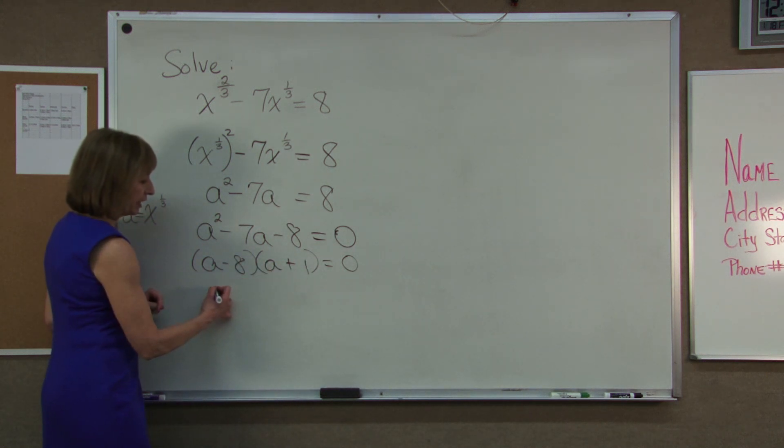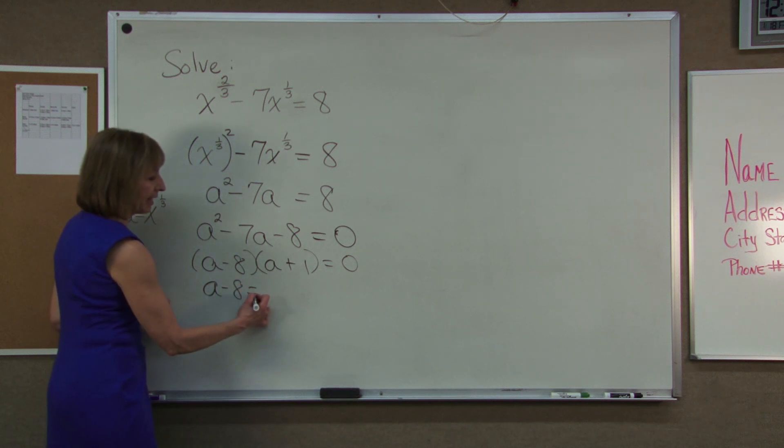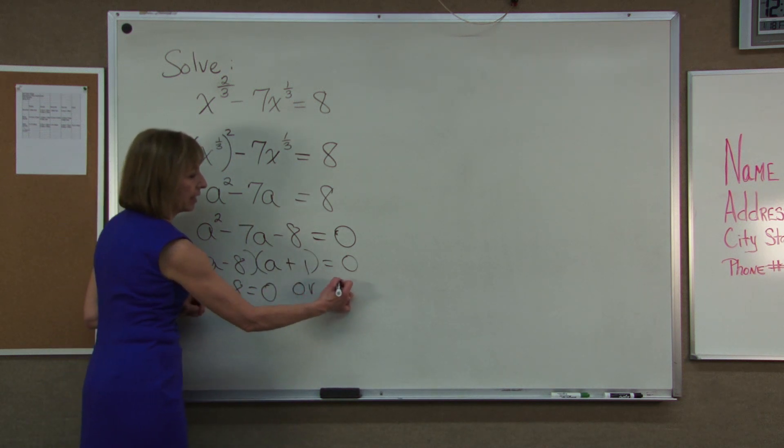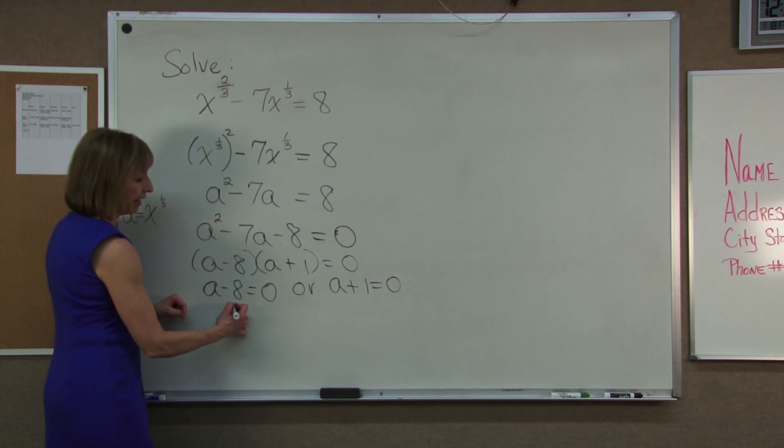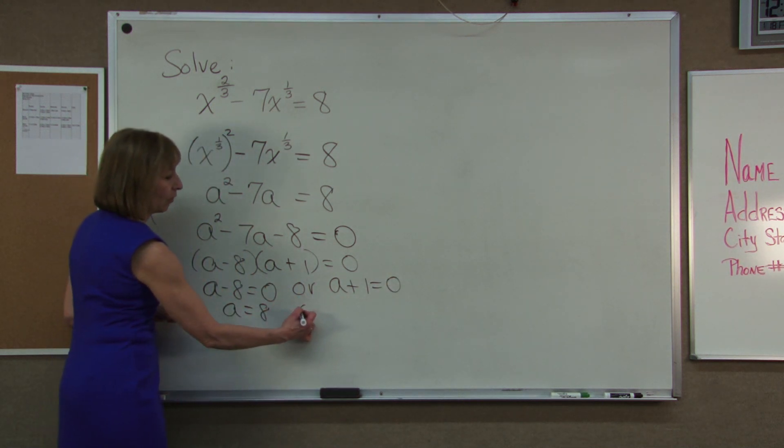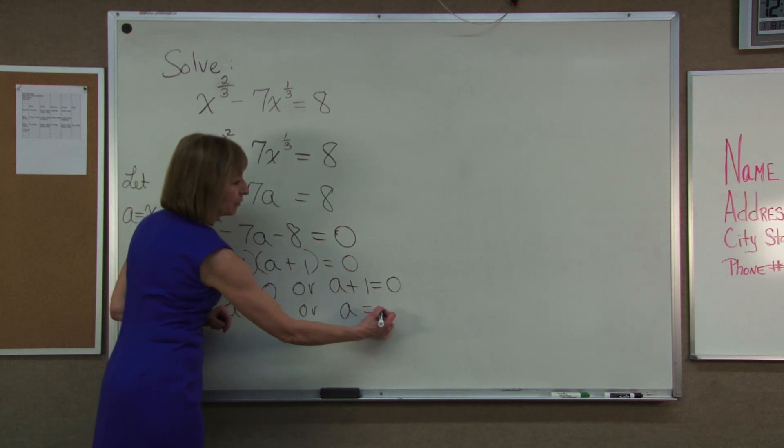Set each factor equal to 0, a minus 8 equals 0 or a plus 1 equals 0. And then solve, a is equal to 8 or a is equal to negative 1.